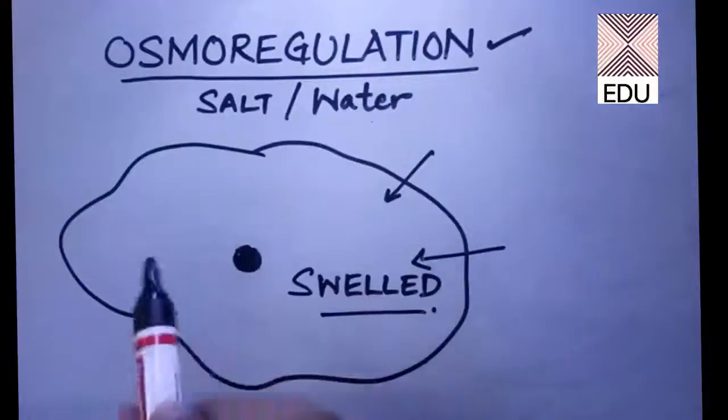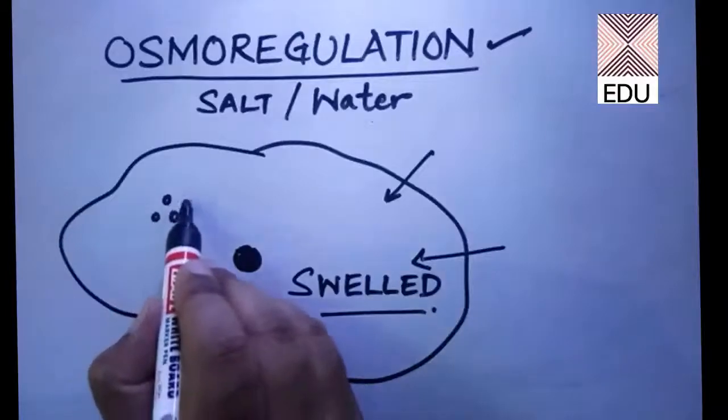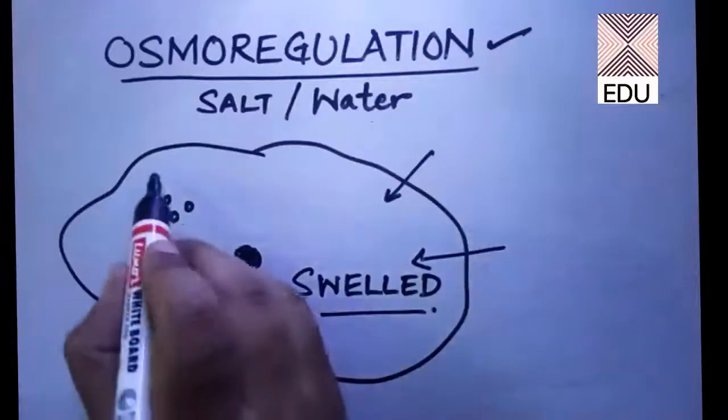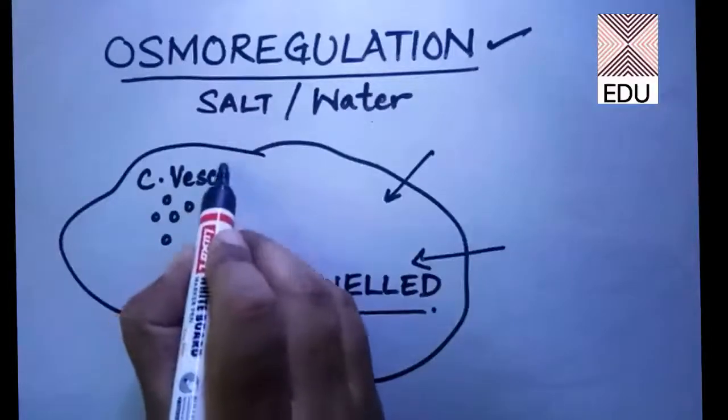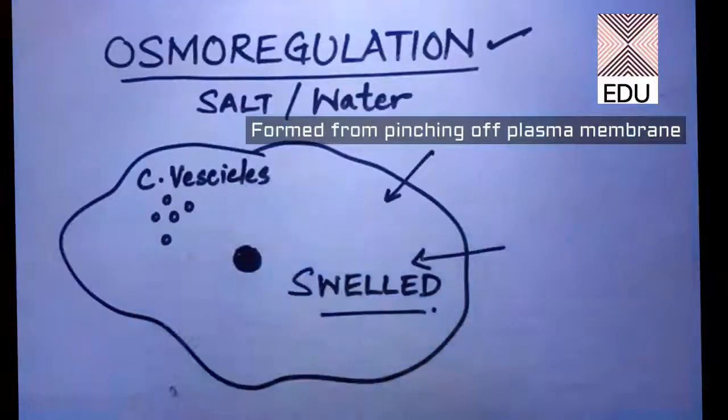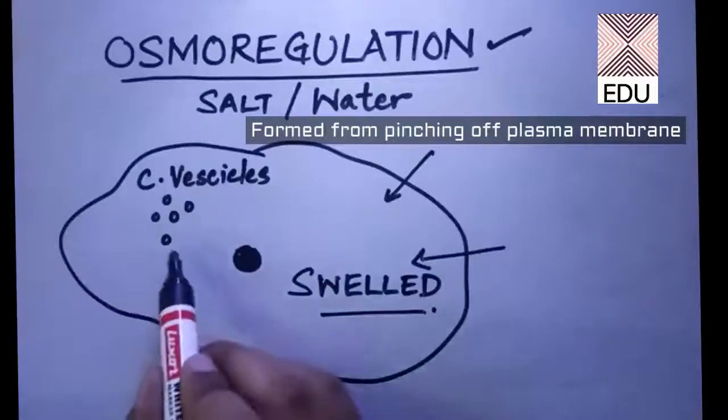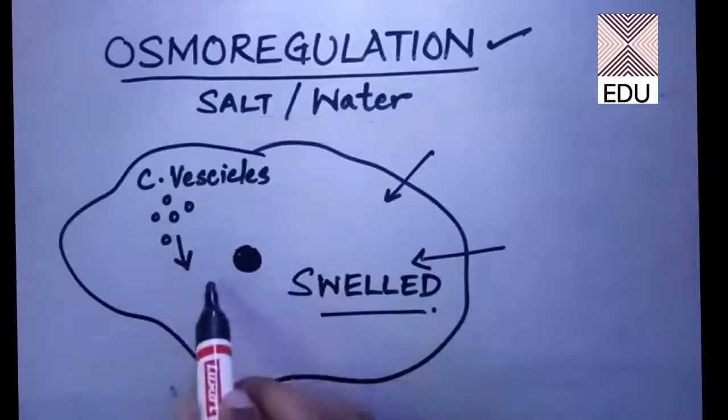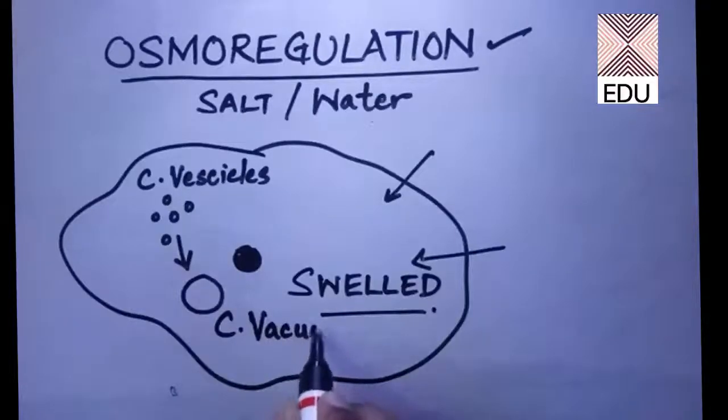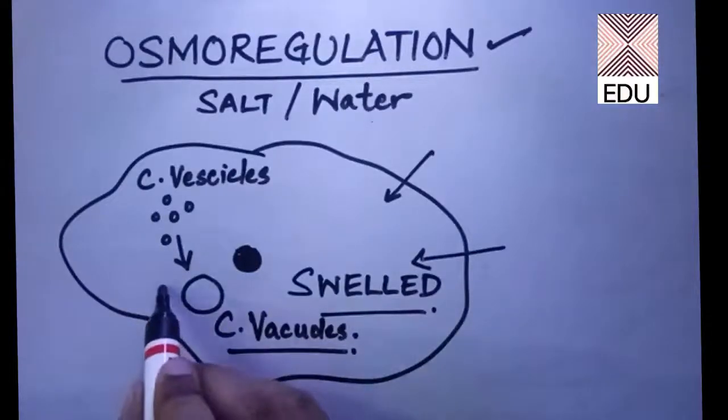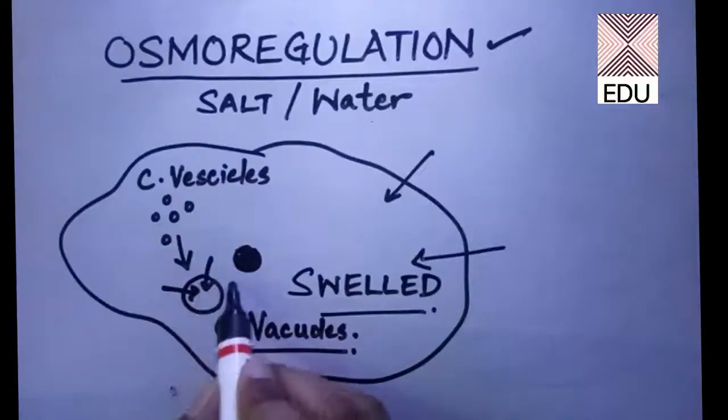So in amoeba there are very small vesicles which are called as contractile vesicles. These vesicles they join to form big contractile vacuoles. Now what these vacuoles will do? These will take the extra water inside.